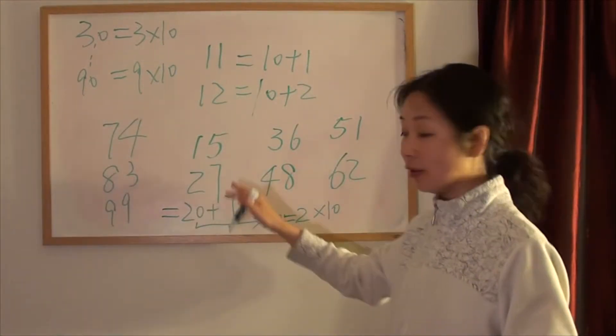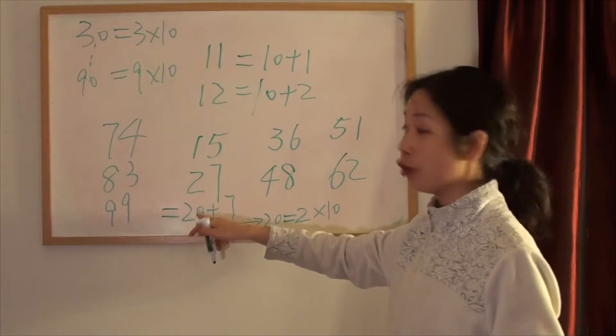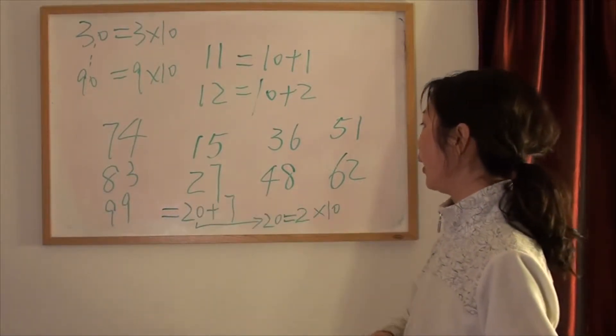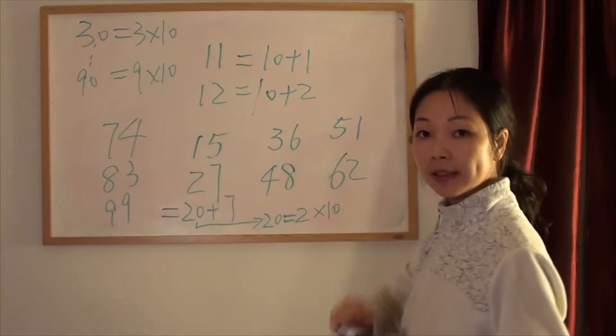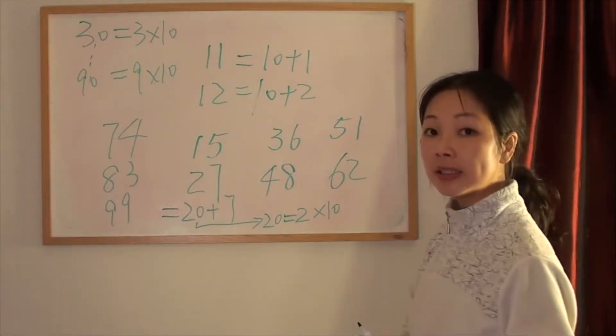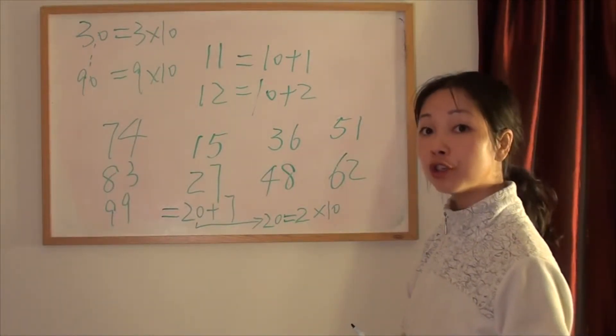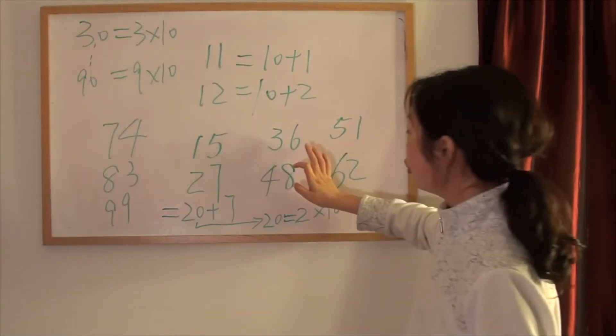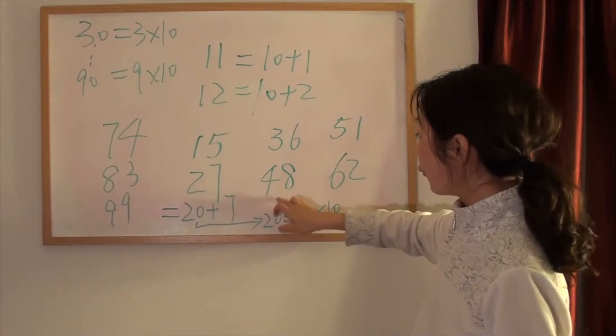Okay, then tell me how to say 27. 二十七, 二十七. Okay, then how to say 36. 36. 三十六, 三十六.